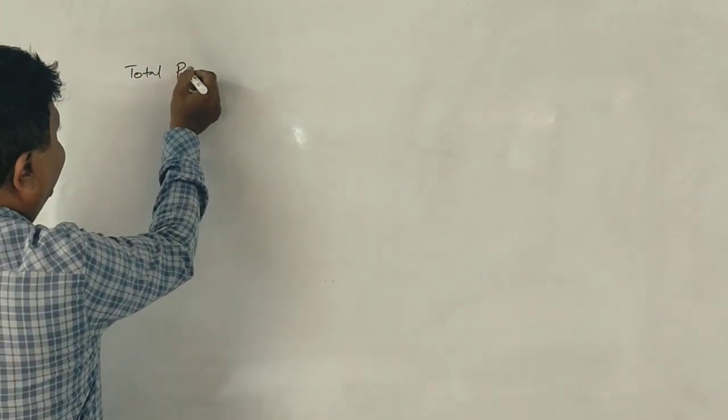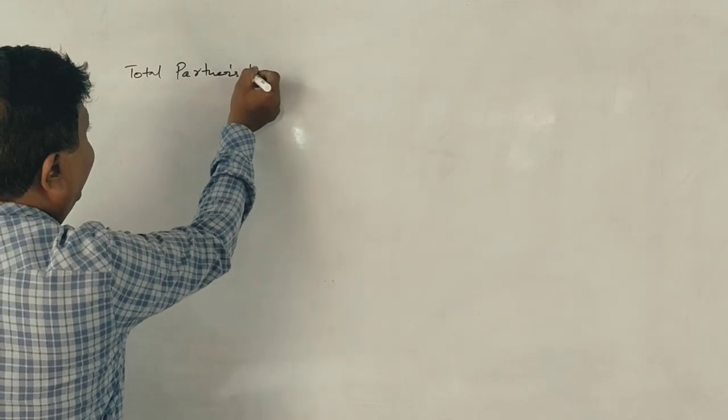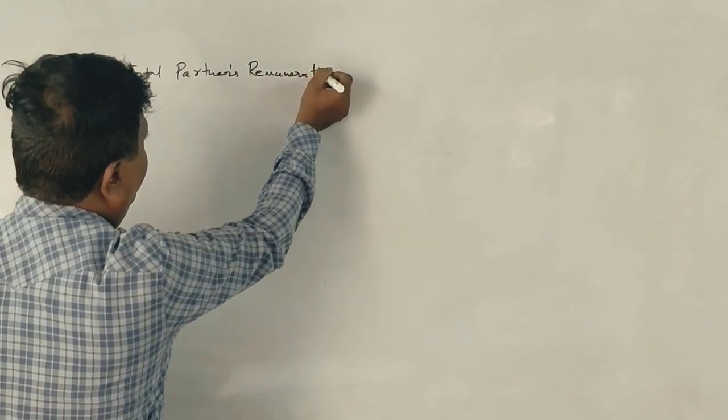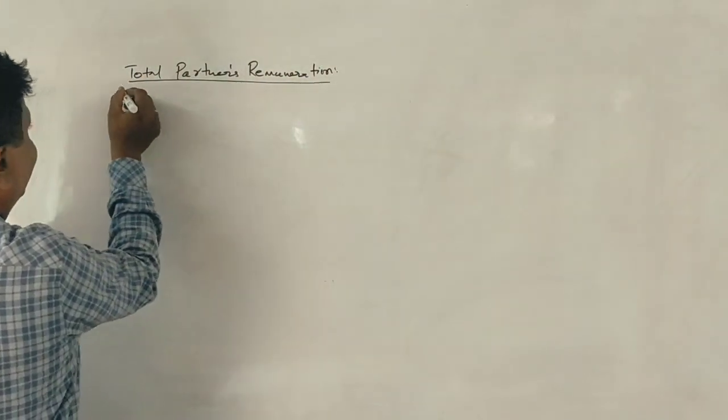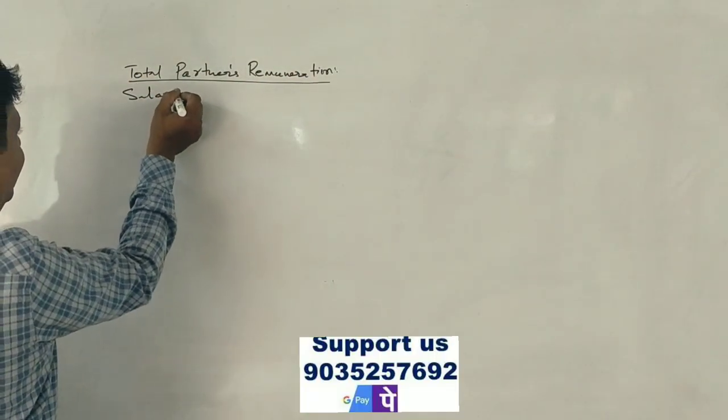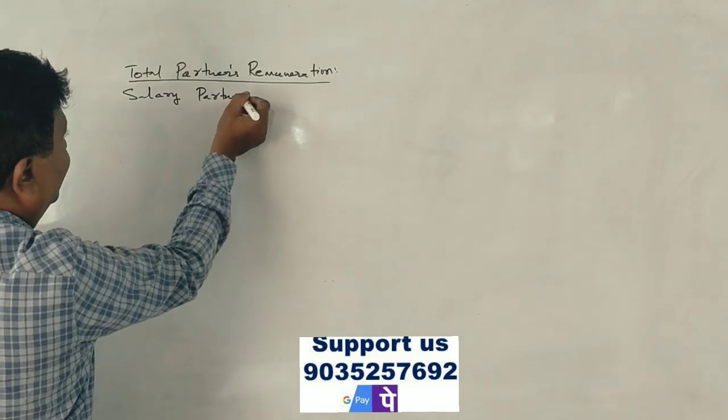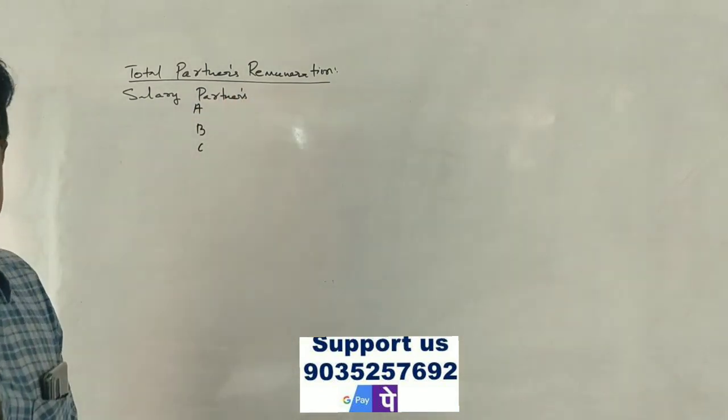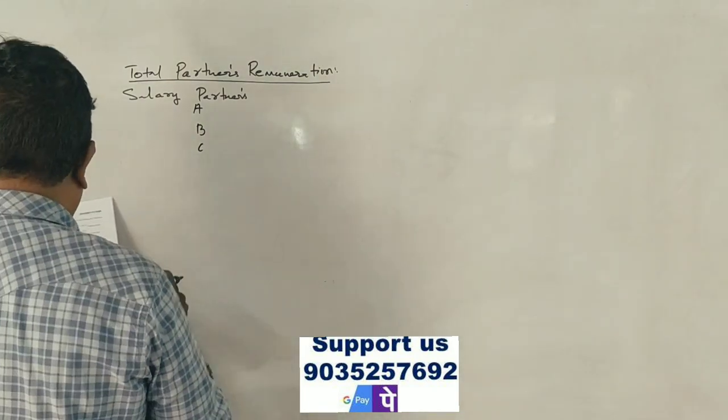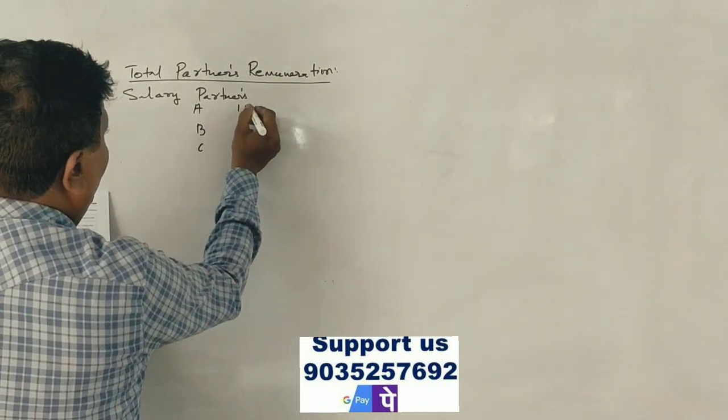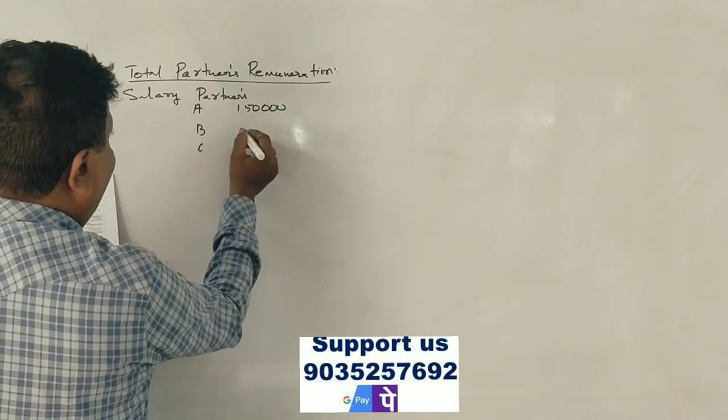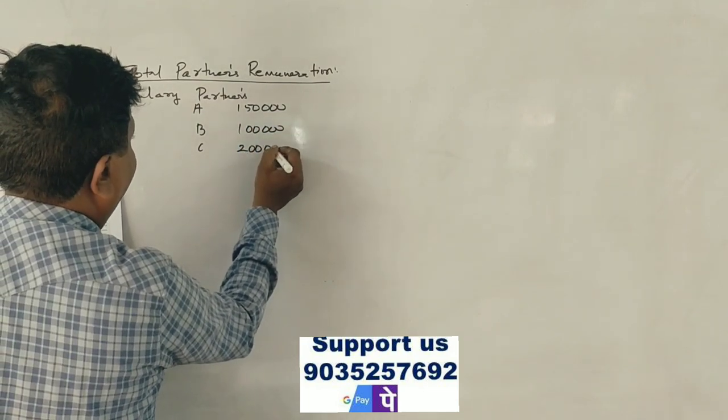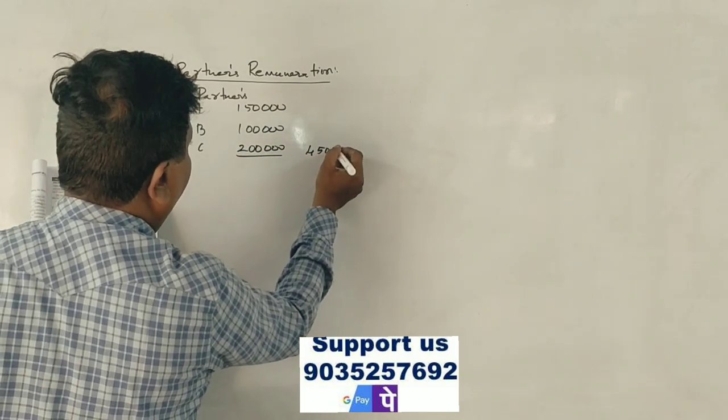The total partner's remuneration. Here is salary partner A, B and C. A is 1 lakh 50, B is 1 lakh, C is 2 lakhs rupees. Total salary is 4 lakh 50,000 rupees.